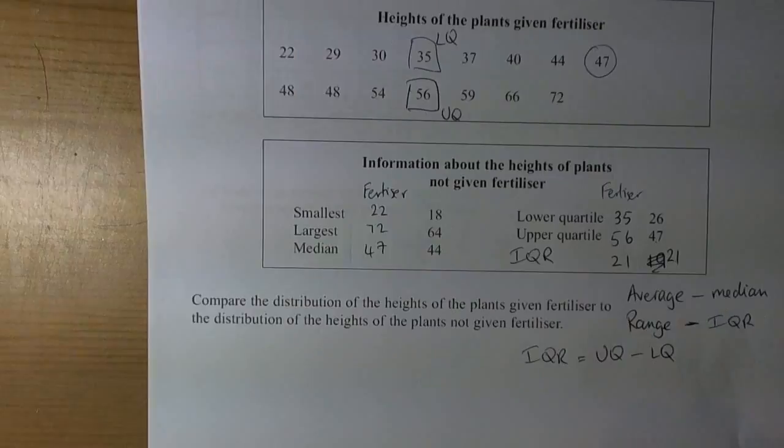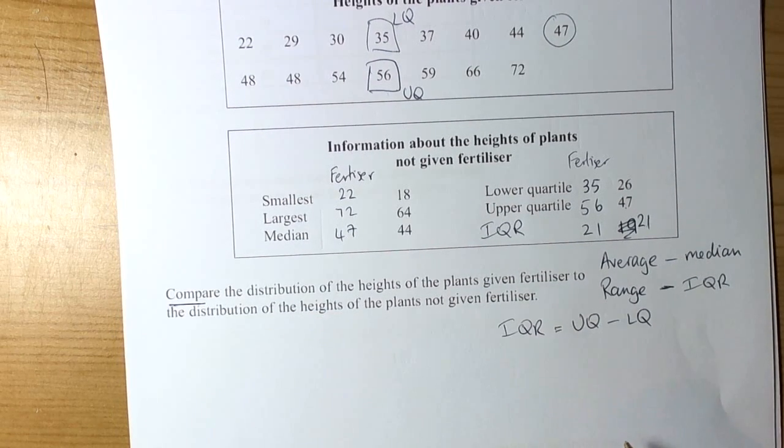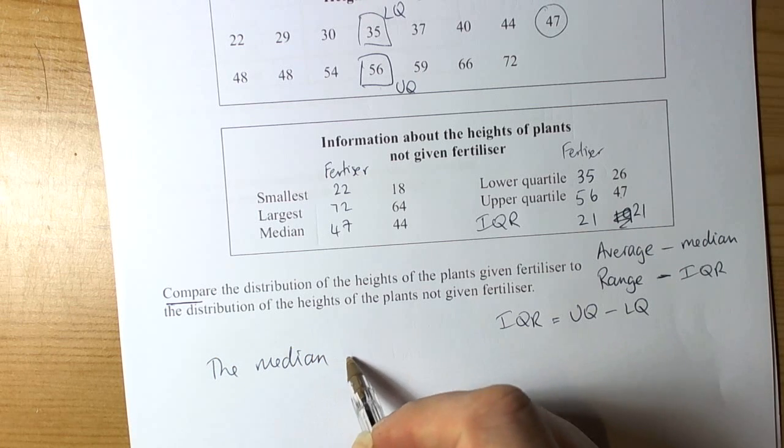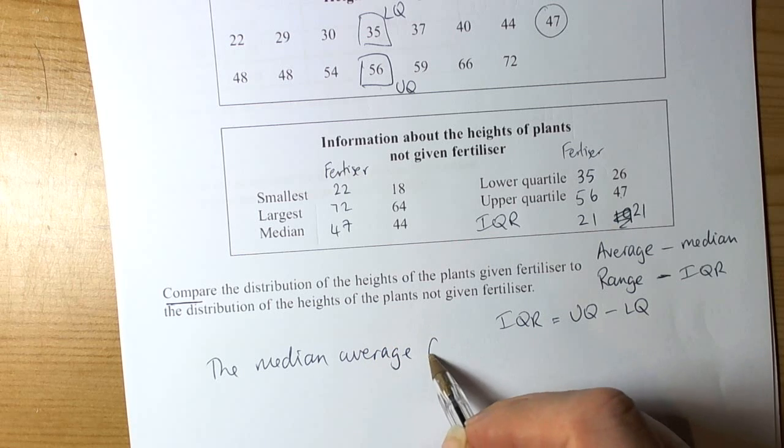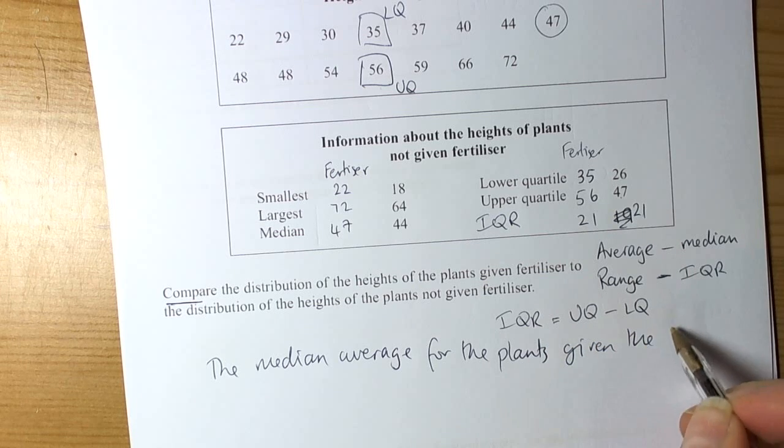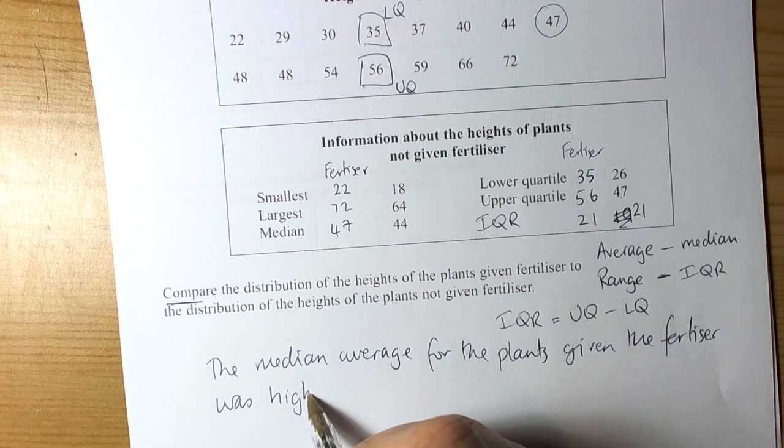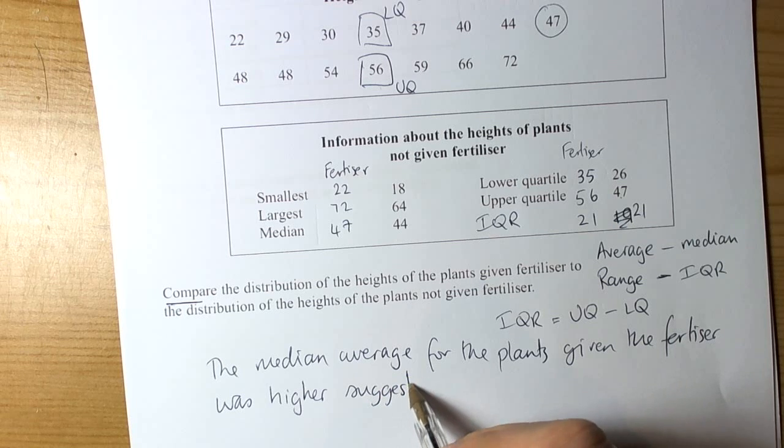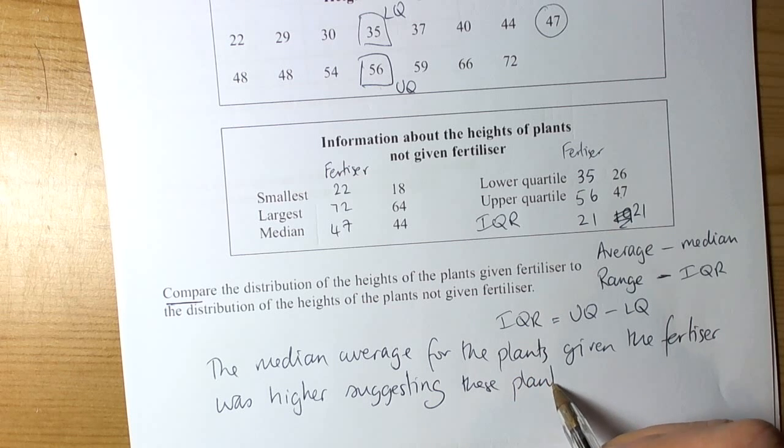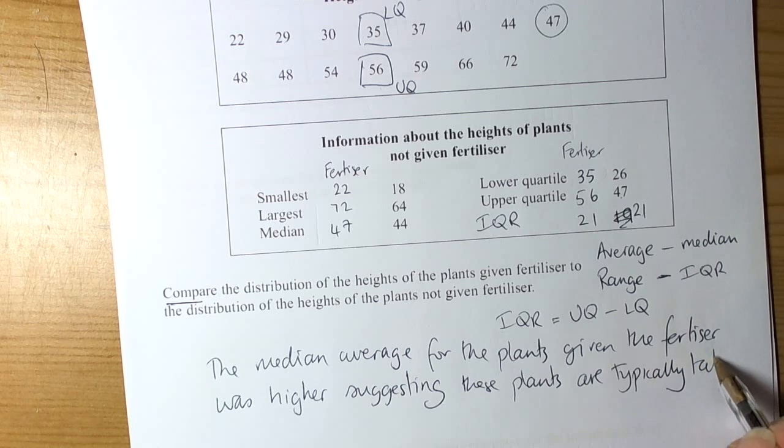We need to write some sentences because of the word 'compare' in the question. What we're going to say is that the median average for the plants given the fertilizer was higher, suggesting these plants are typically taller - so they're bigger.